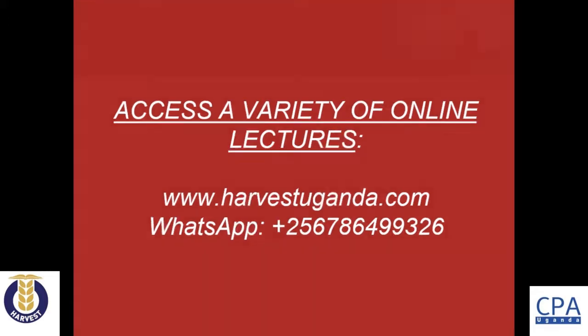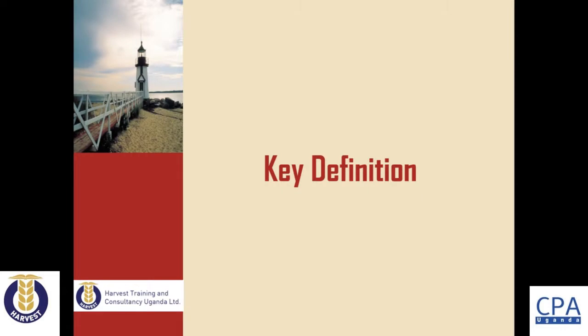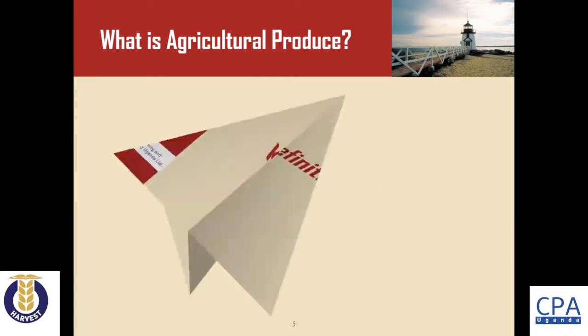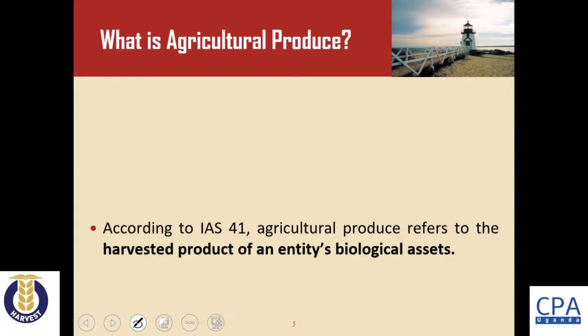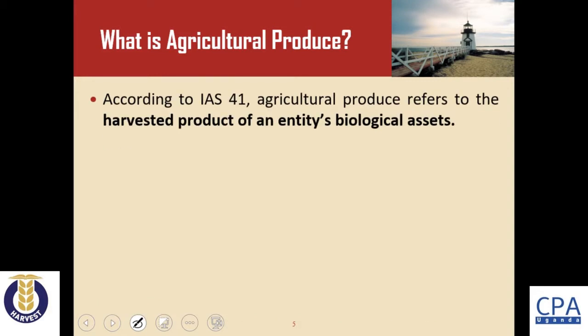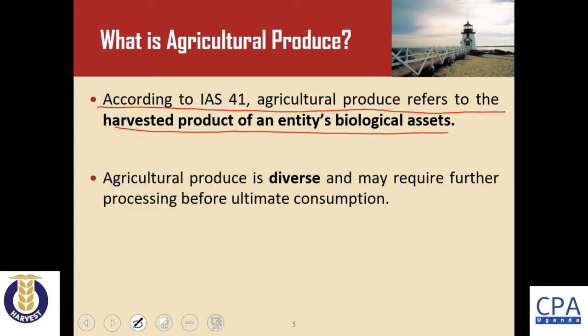We begin by giving a definition of agricultural produce. According to International Accounting Standard 41, agricultural produce refers to the harvested product of an entity's biological assets.